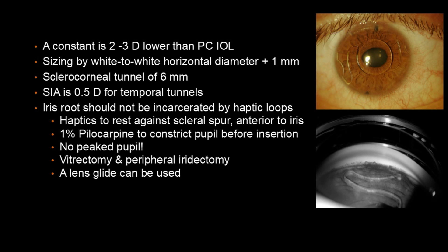The iris root should not be incarcerated by the haptic loops, and haptics should rest against the scleral spur anterior to the iris periphery. 1% pilocarpine to constrict the pupil before insertion helps to avoid a peaked pupil. Vitrectomy and peripheral iridectomy are part and parcel of implantation of an AC IOL because of a compromised capsular bag or zonules.